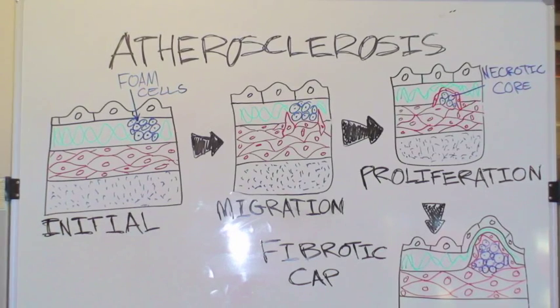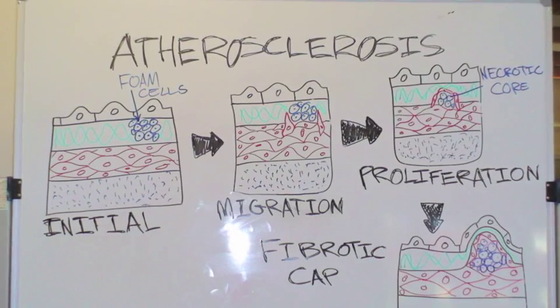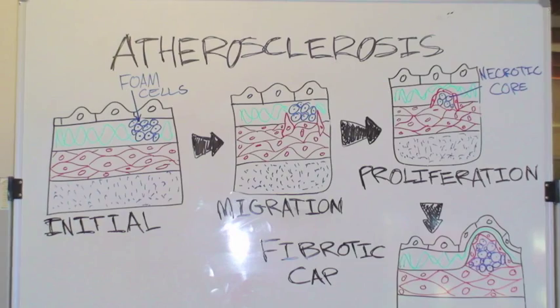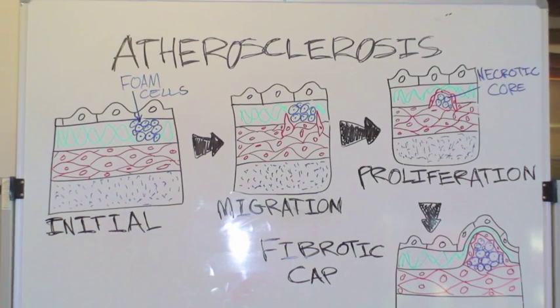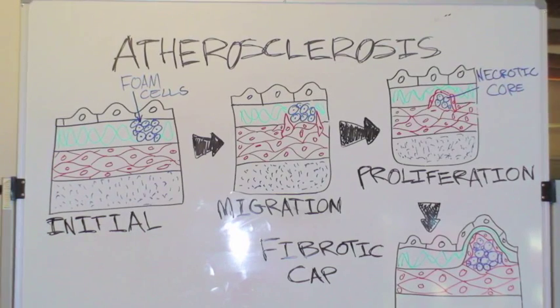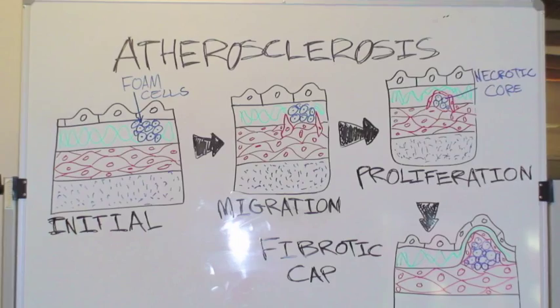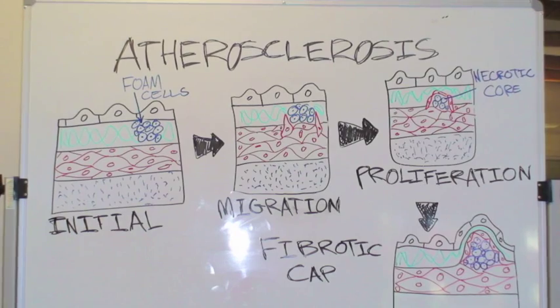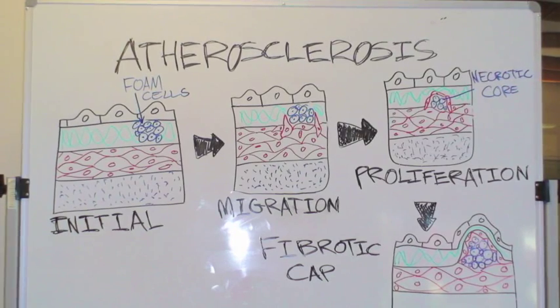This forms as macrophages release metalloproteinase, which degrades the extracellular matrix and causes the macrophages to apoptose. This is the atherosclerotic plaque.